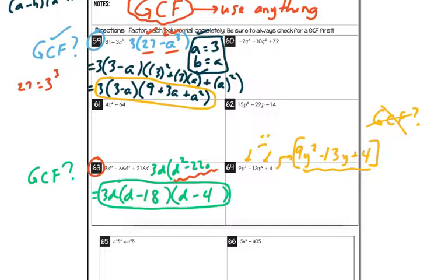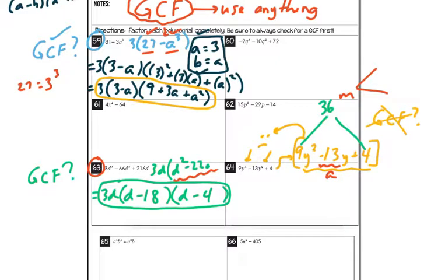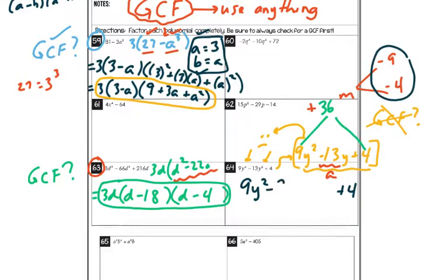The a value here is 9, so we have to do this one by grouping. We're going to think of two numbers that multiply to give 36 — I took the outer numbers — and add to give negative 13. I'm thinking 9 and 4 might be pretty close, but I need the 13 to be negative when I add. Two negatives multiply to give positive 36, so I think that works: negative 9 and negative 4. The next step is we keep the outsides and rewrite the inside term as those two numbers — negative 9y and negative 4y.